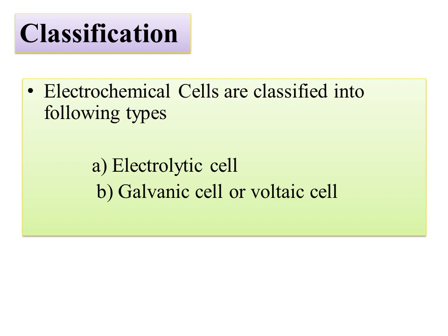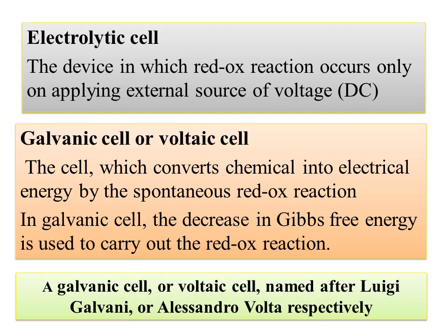Electrochemical cells are classified into two types: electrolytic cells and galvanic cells. The electrolytic cell is a device in which oxidation occurs only by an external source of voltage.